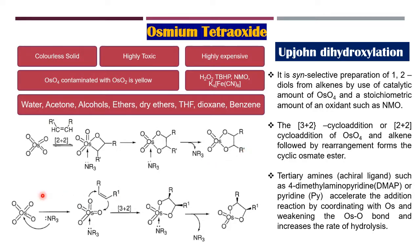Another pathway can be thought of in which the trialkyl amine attaches with the osmium tetroxide, which then undergoes a 3+2 cyclic addition reaction giving the cyclic osmate ester, which further undergoes hydrolysis to give the syn 1,2-diol.